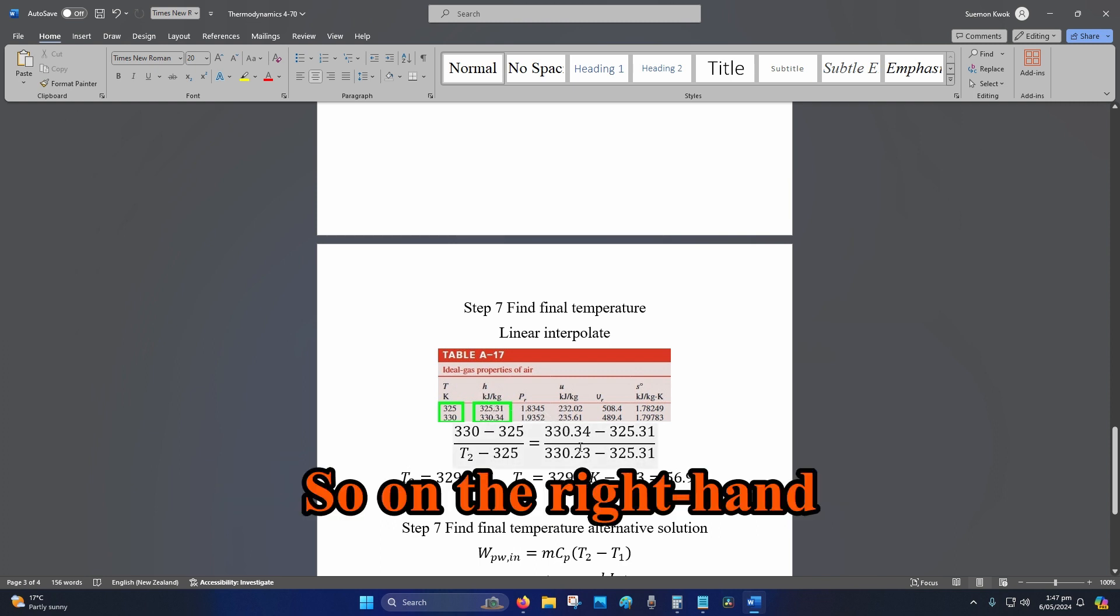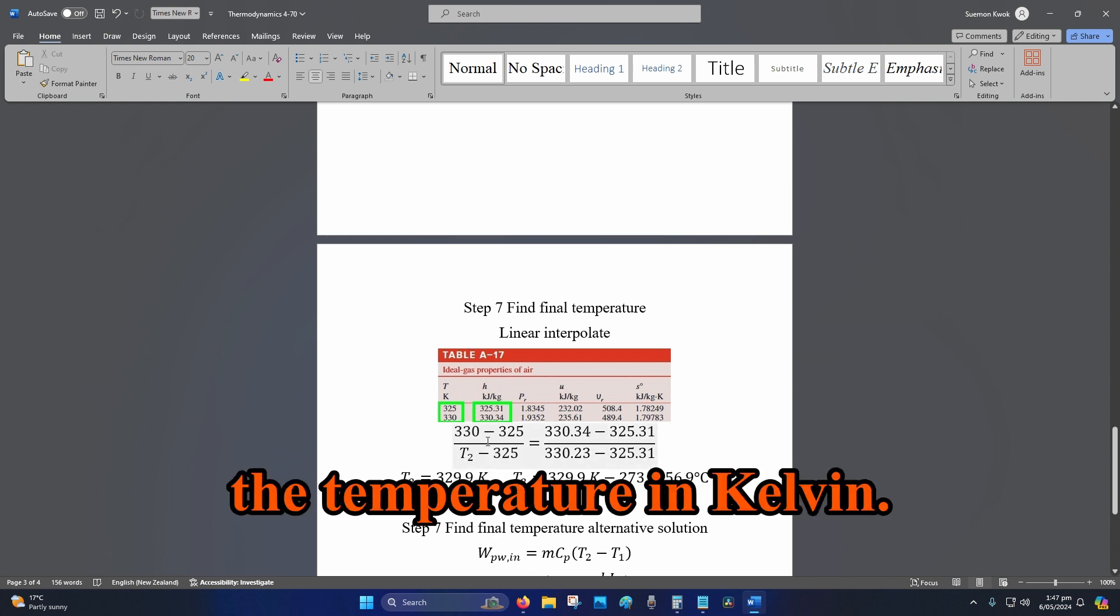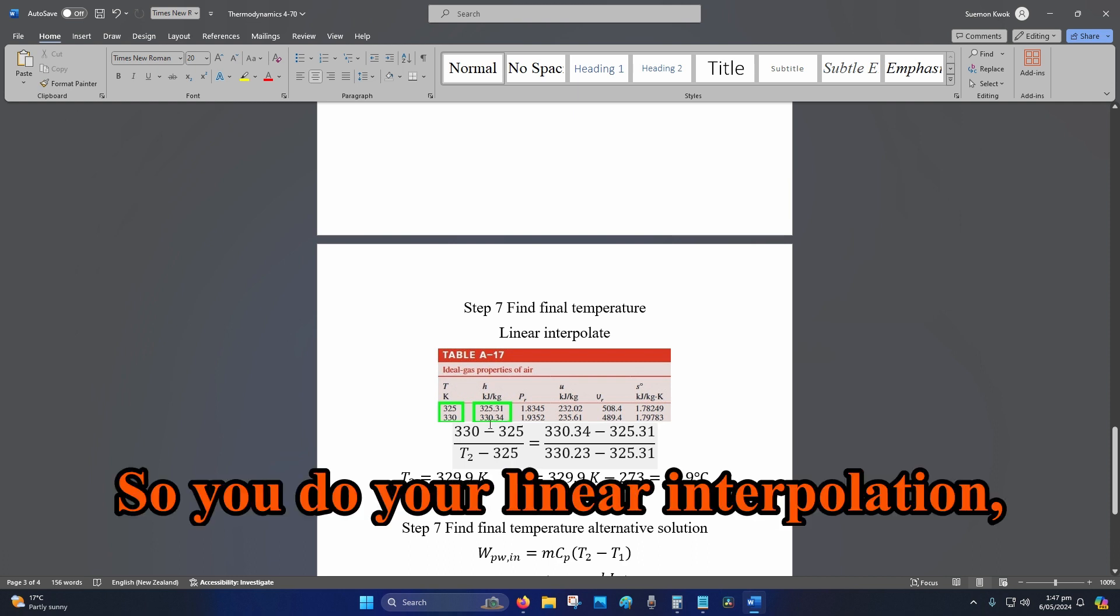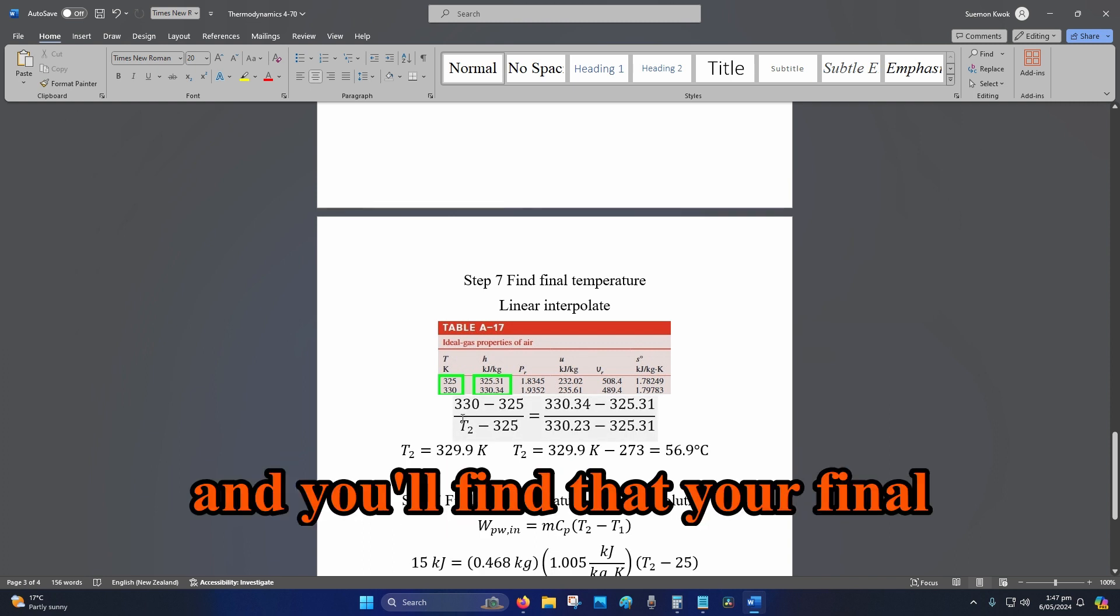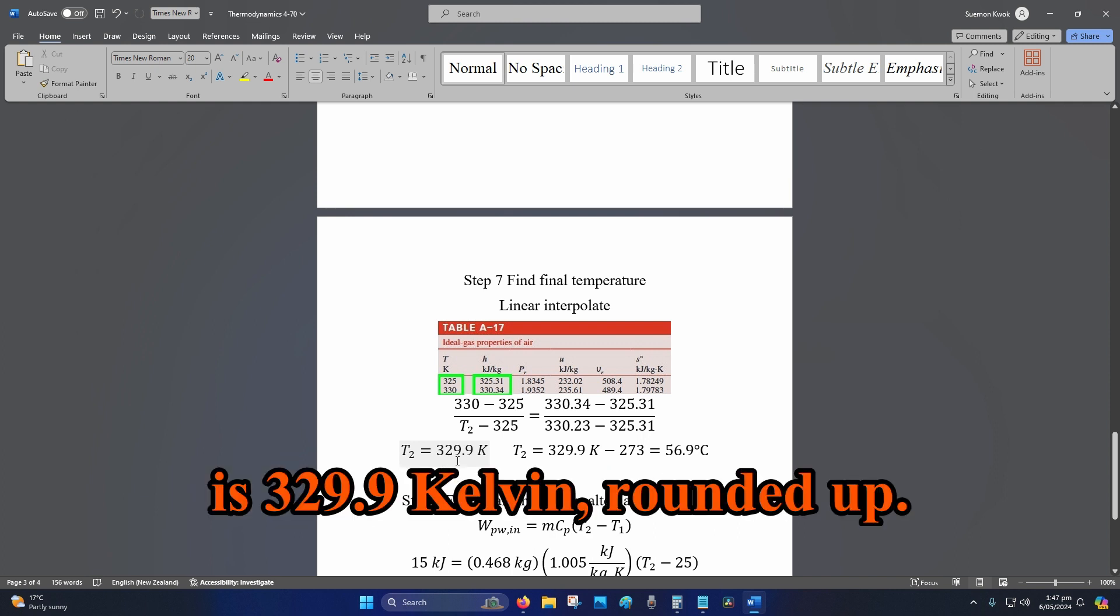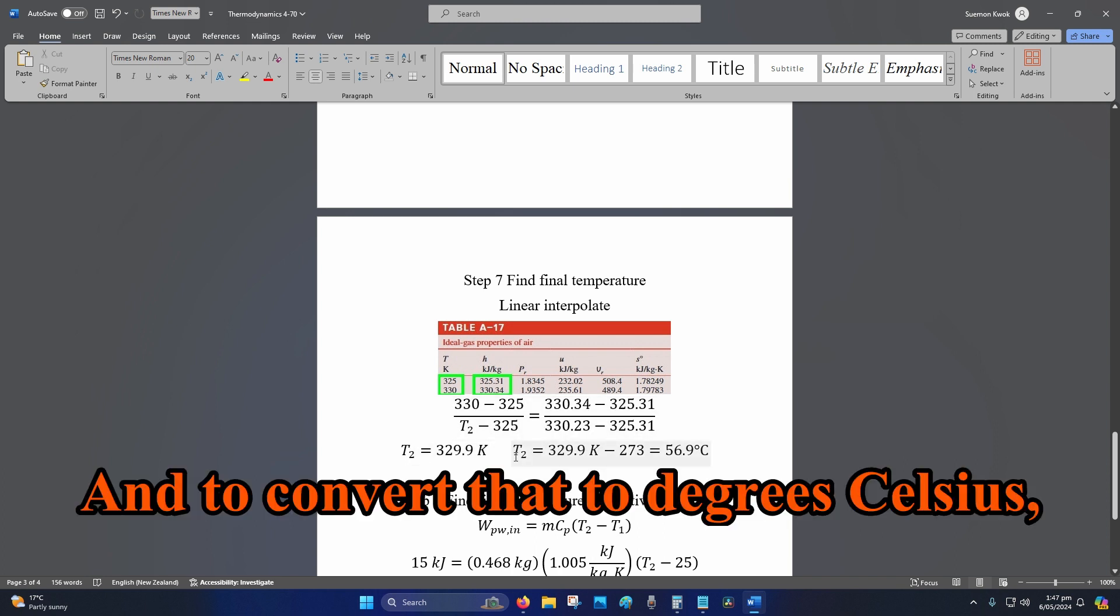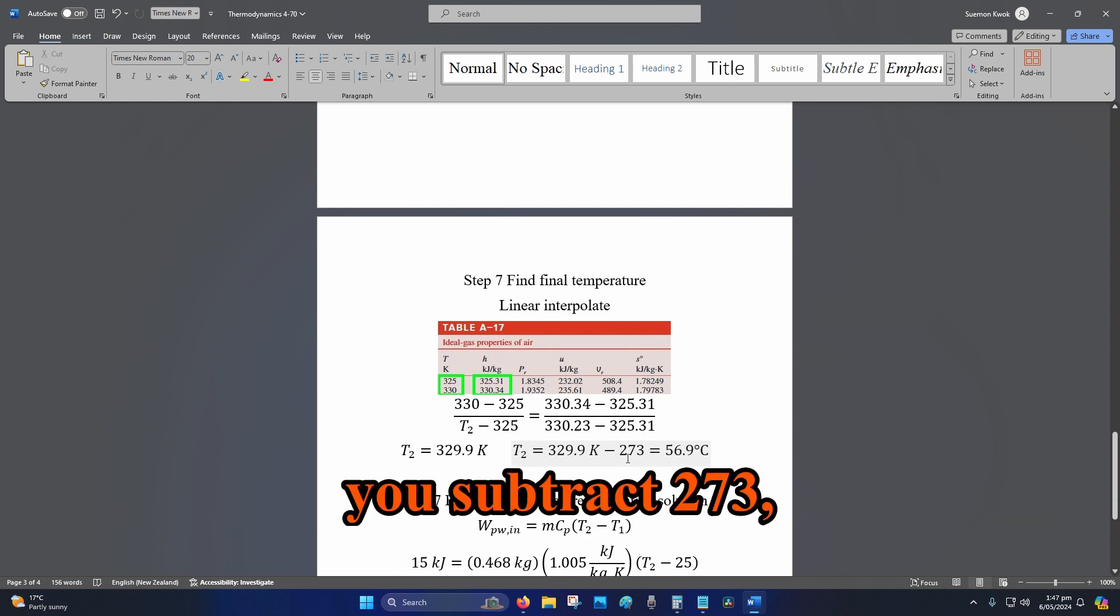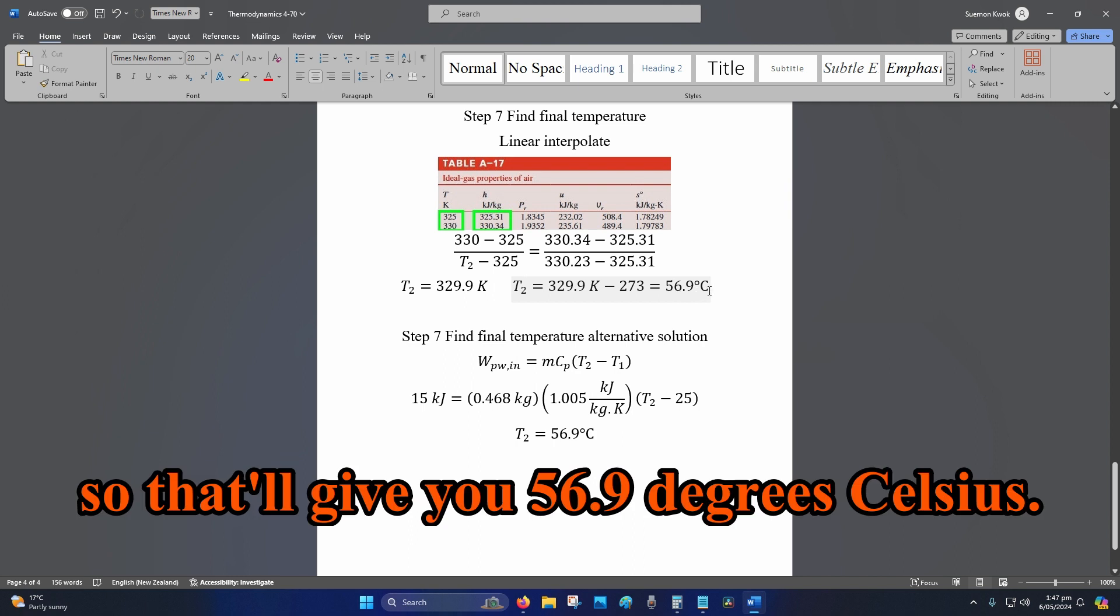So on the right hand side is the enthalpy, on the left hand side is the temperature in Kelvin. So you do your linear interpolation, and you can do this in your graphic calculator, and you'll find that your final temperature in Kelvin is 329.9 Kelvin rounded up. And to convert that to degrees Celsius, you subtract 273, so that will give you 56.9 degrees Celsius.